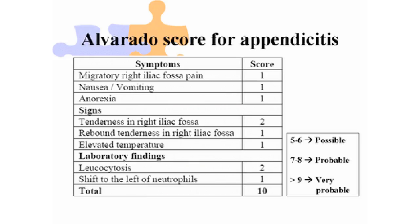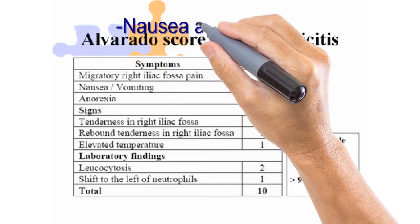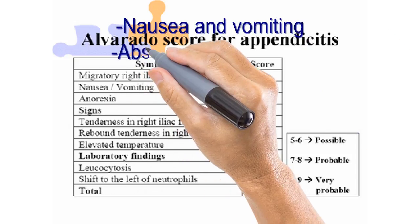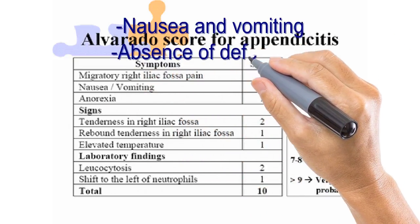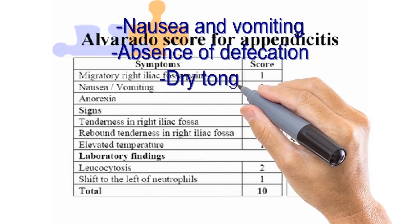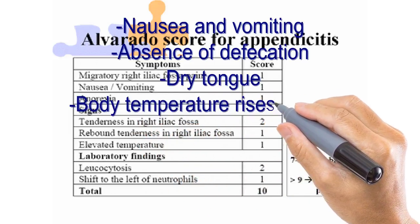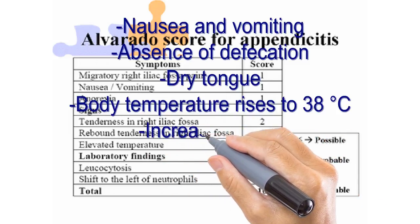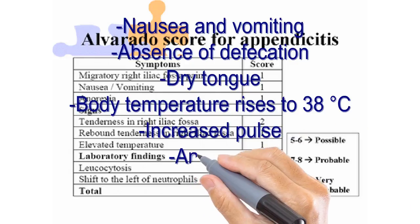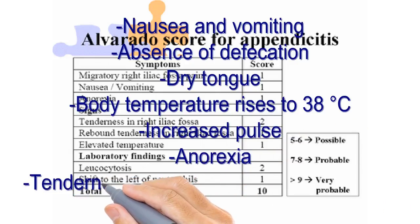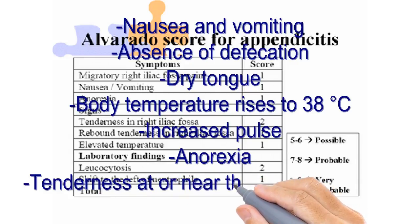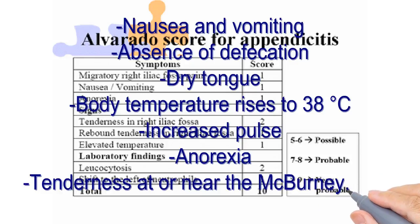Nausea and vomiting are symptoms of acute appendicitis and typically occur after the pain. The frequency of vomiting can be used as a prediction marker for the pathomorphologic form. Usually there is an absence of defecation on the same day of clinical presentation, except for pelvic and retroperitoneal localization, which presents with tenesmus. The tongue is dry and body temperature rises to 38 degrees Celsius. The pulse increases accordingly to the temperature. Anorexia nearly always accompanies appendicitis; it is so constant that the diagnosis should be questioned if the patient is not anorexic. Patients with appendicitis usually prefer to lie supine with the thighs, particularly the right one, drawn up. If asked to move, they do so slowly and with caution.